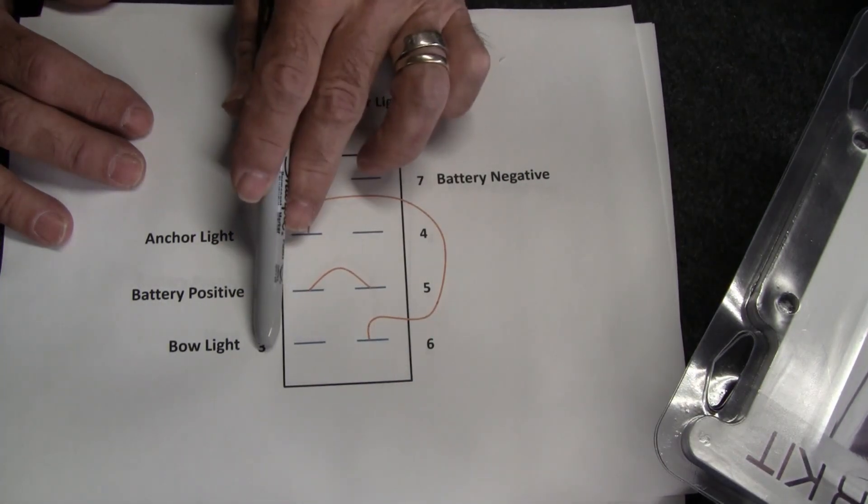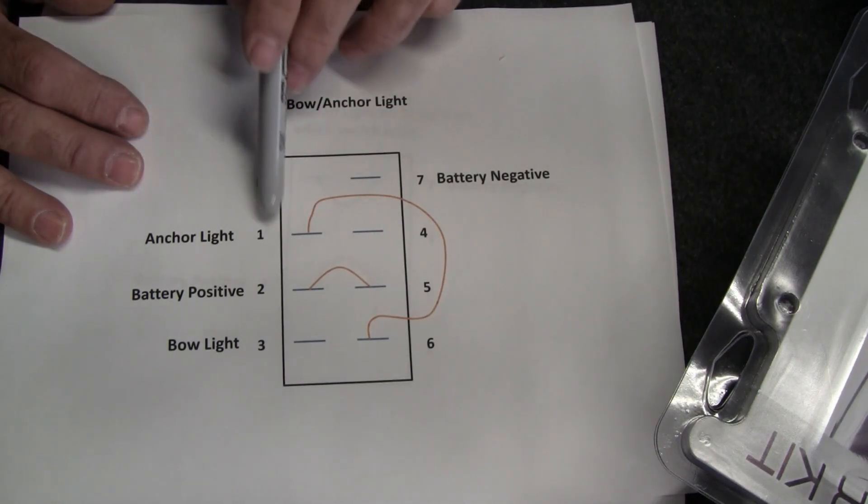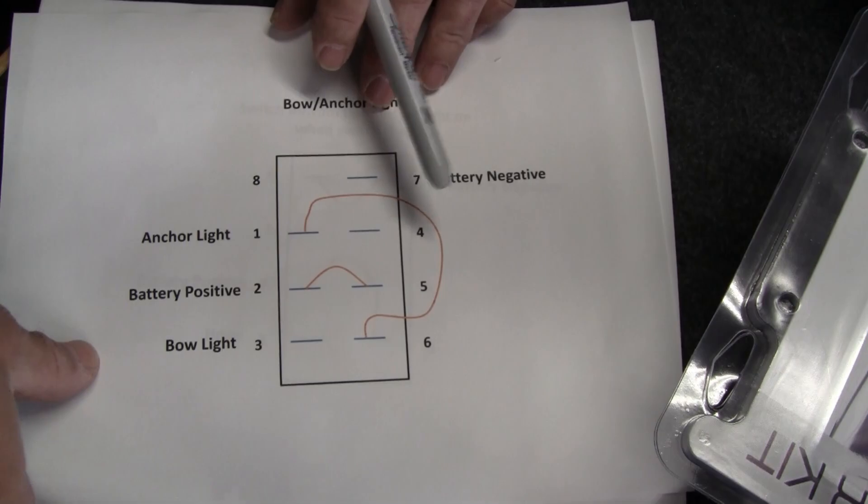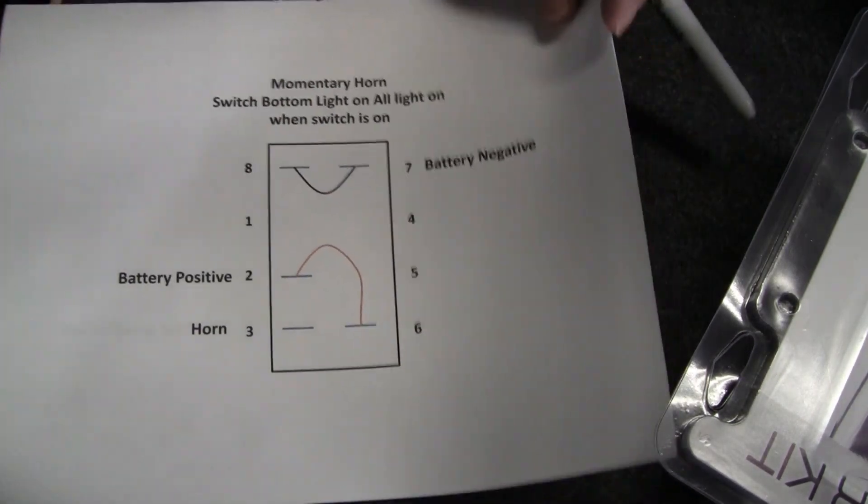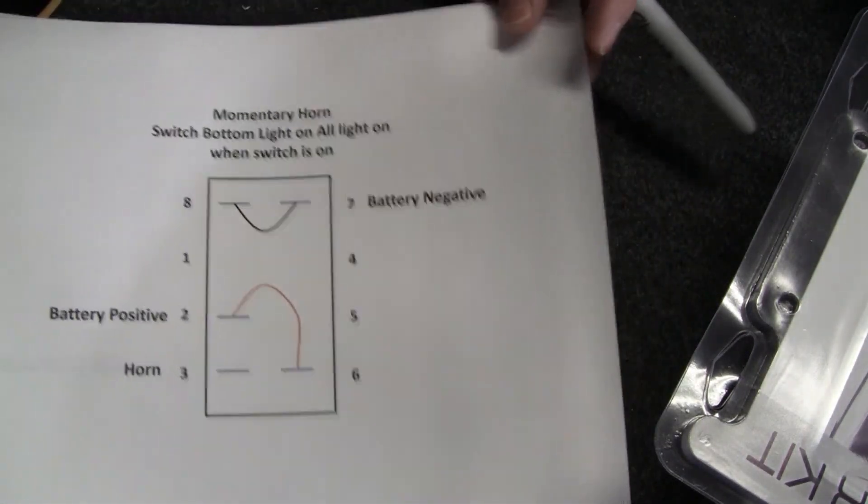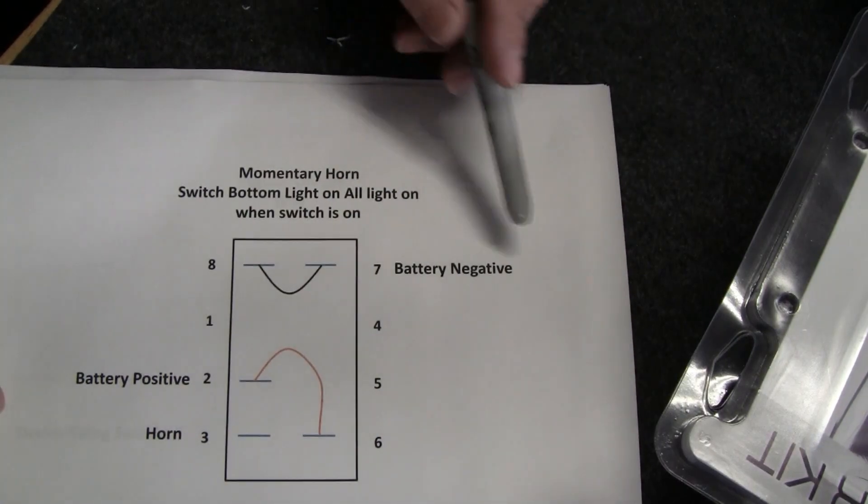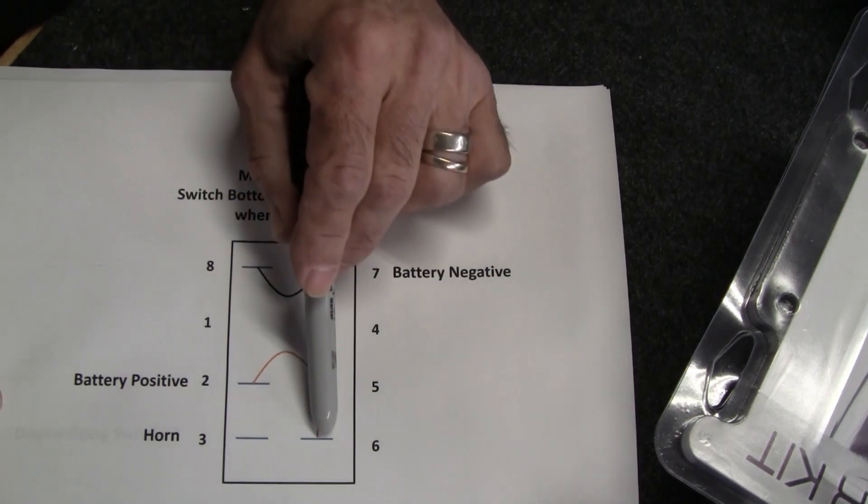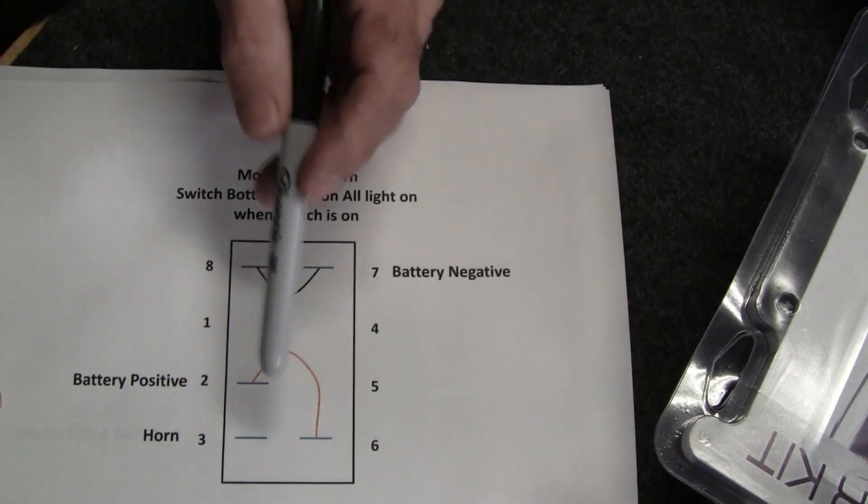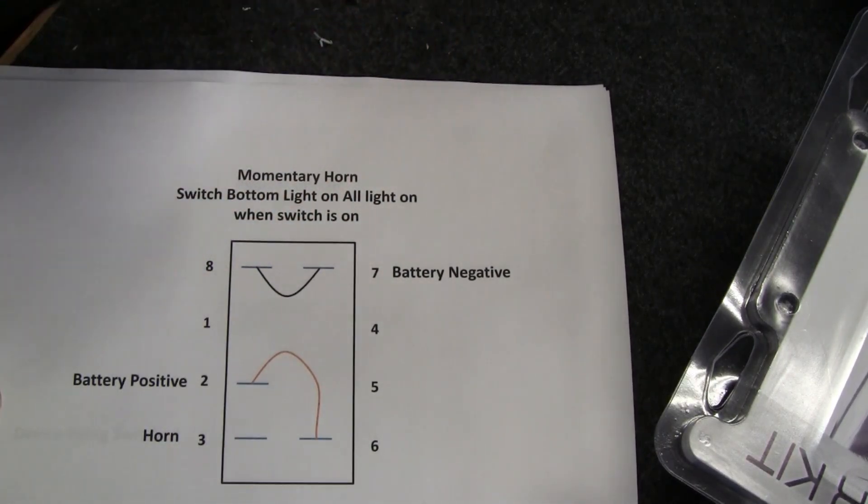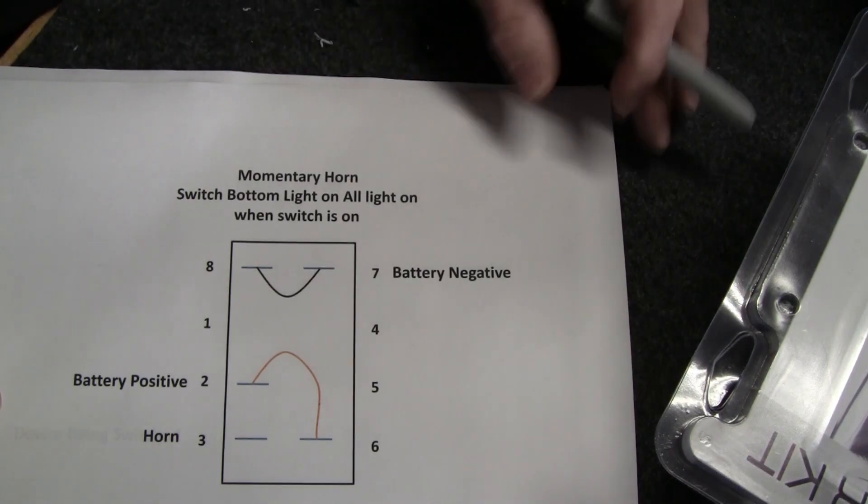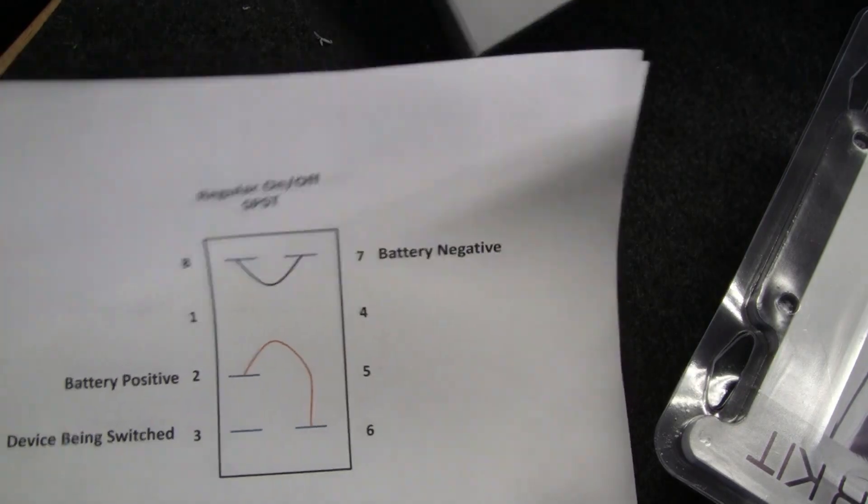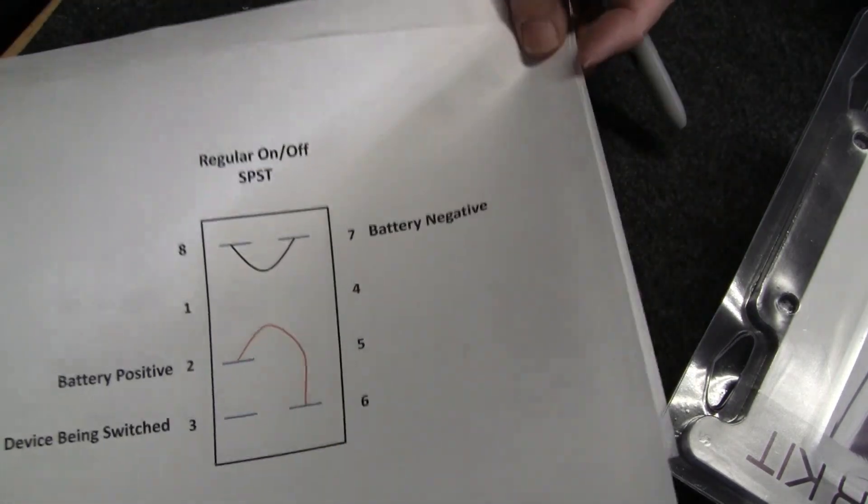So that's one, probably the most complex one. The next one is the momentary horn switch. You don't have to do a lot with this one. Negative battery jumper to 8, battery positive to 2, jumper to 6, wire your horn, that'll be the positive to the horn. Of course you've got your ground that's somewhere else as well. That's it.